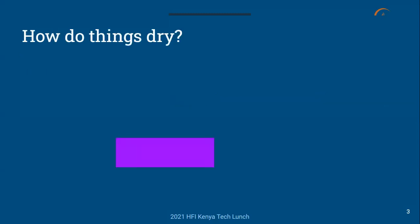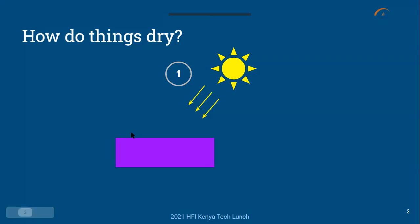First, how do things dry? Most people probably think there's one main mode of drying, and that's heat — you have to get something hot for it to dry out. That is one mode. If you have a heat source, say the sun radiating heat onto a wet briquette mass, or it could be a biomass fire or even a microwave — people actually do drying in microwaves.